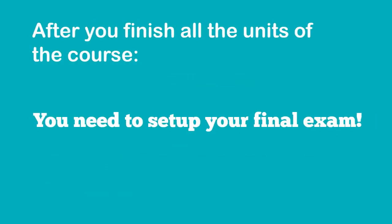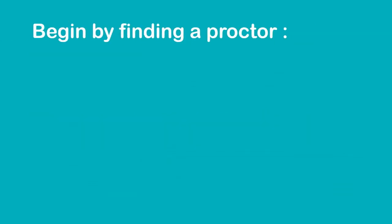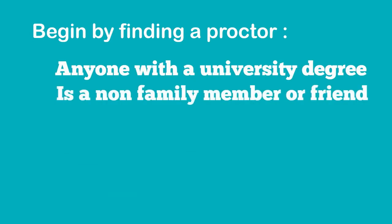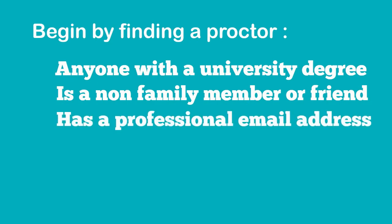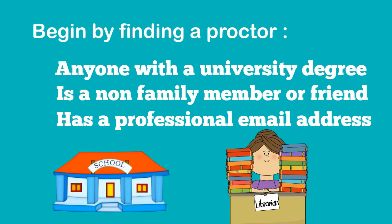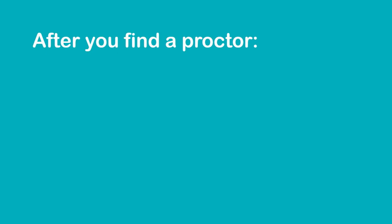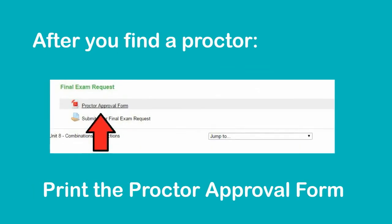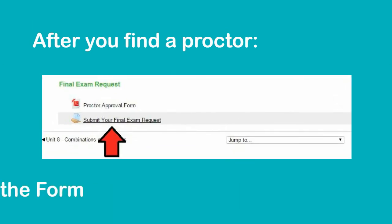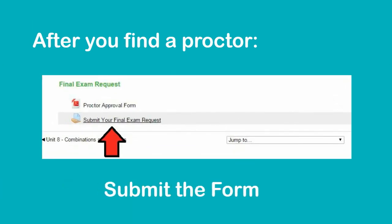After you finish all the units of your course, you need to set up your final exam. Begin by finding a proctor. Your proctor can be anyone with a university degree who is a non-family member or friend with a professional email address. Most students set up their final exam at their current school or local library. After you find a proctor, print the proctor approval form, have it signed, and submit the form for approval.